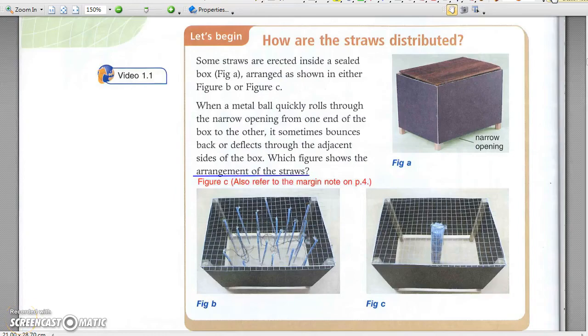In the video, marbles are mostly slightly deflected when the straws are distributed evenly in the box. On the other hand, marbles mostly go straight when the straws concentrate at the centre as in the second case.